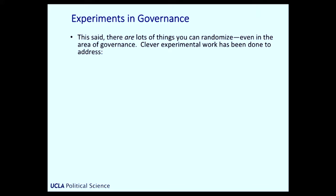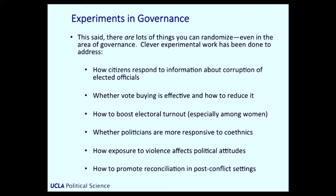That said, there are lots of things you can randomize, even in the area of governance. There's been a whole bunch of really clever, innovative experimental work done to address, for example, how citizens respond to information about the corruption of elected officials, or about whether vote buying is effective and if so how to reduce it, or about how to boost electoral turnout especially among women or members of underrepresented groups, or whether politicians are more responsive to members of their own ethnic group, or how exposure to violence affects political attitudes, or how to promote reconciliation in post-conflict settings. In the area of governance, it is possible to use experimental techniques to get beginnings of answers to some pretty important and fundamental questions.